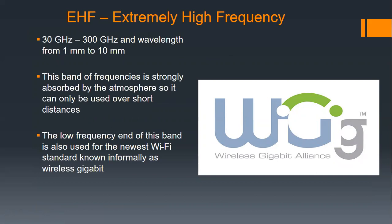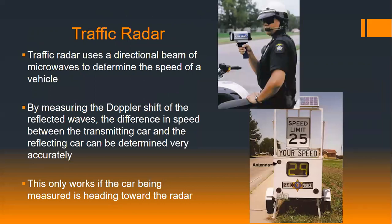Extremely high frequency — from 30 gigahertz to 300 gigahertz — is used for very large data transmission; there is a standard for gigabit communication operating in this realm. Traffic radar uses microwaves to determine the speed of vehicles: police employ a beam of microwaves, bounce it off your vehicle, and when it returns, the transmission frequency and the Doppler-shifted reflected frequency are compared. The Doppler shift due to your speed helps determine how fast you were traveling.